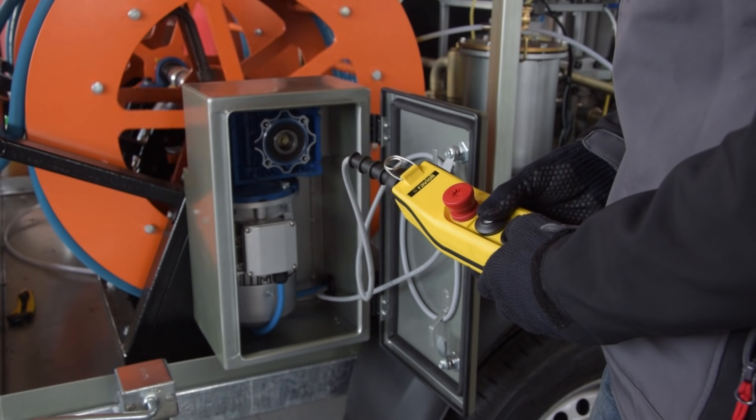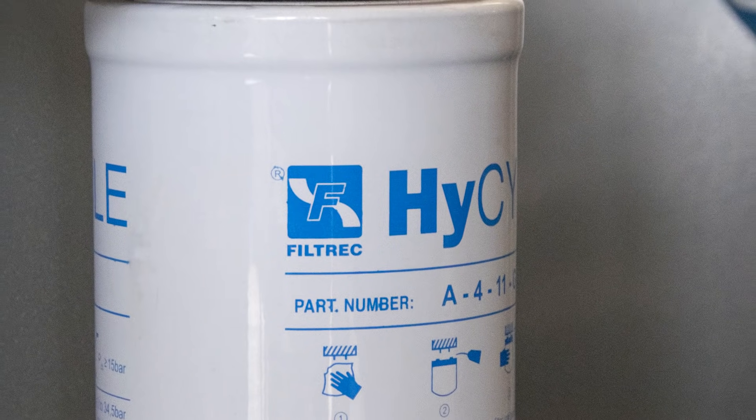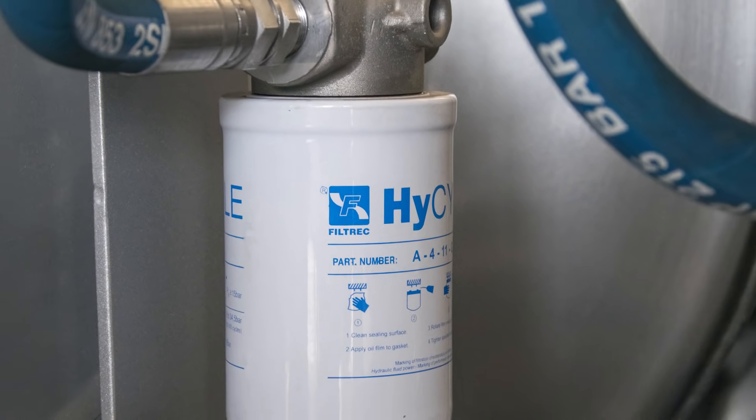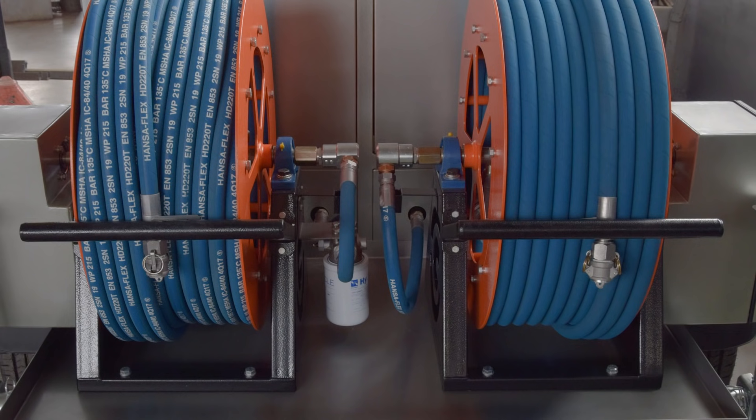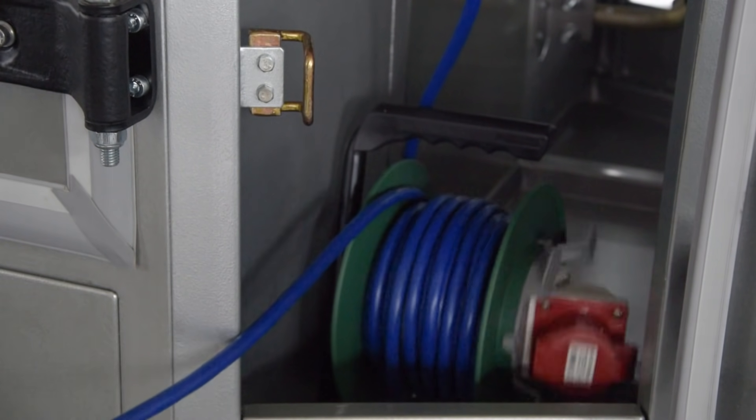The hose reel drums are equipped with an automatic drive for quick hose rewinding. For filling with new oil, the system is provided with an additional filter of 15 micron. The unit is connected to an outside power supply.